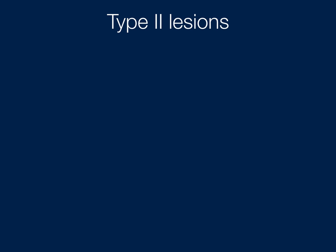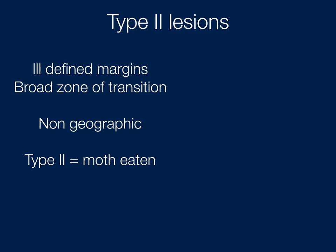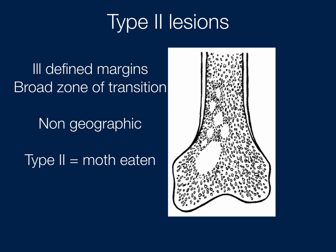Moving on to type 2 lesions — again, the classifications are not as important as the patterns. This type has ill-defined margins and a broad zone of transition; it's not a geographic lesion. Type 2 is the moth-eaten pattern. Here's an example with several small lucencies, likely some of which are ill-defined.